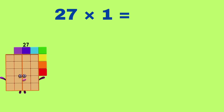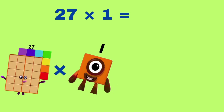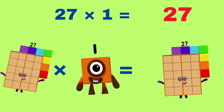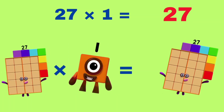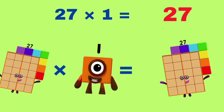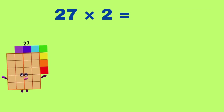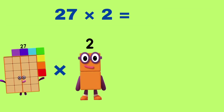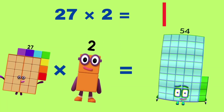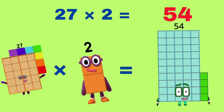27 multiplied by 1 is equals to 27. 27 multiplied by 2 is equals to 54. 54.